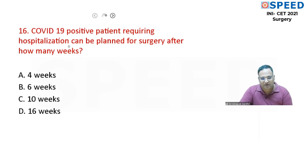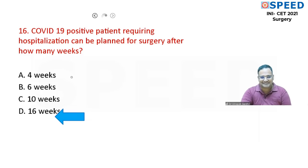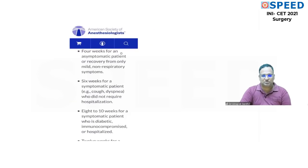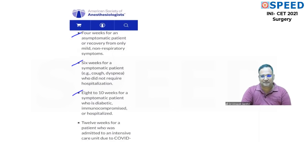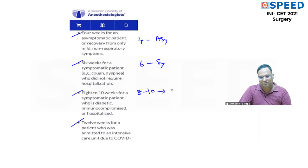Question sixteen: A COVID-19 positive patient requiring hospitalization — surgery can be planned after how many weeks? The answer is six weeks. Per the American Society of Anesthesiologists classification: 4 weeks for asymptomatic COVID-positive patients; 6 weeks for symptomatic patients; 8 to 10 weeks for symptomatic patients who are diabetic or immunocompromised; 12 weeks for patients who were in the ICU.